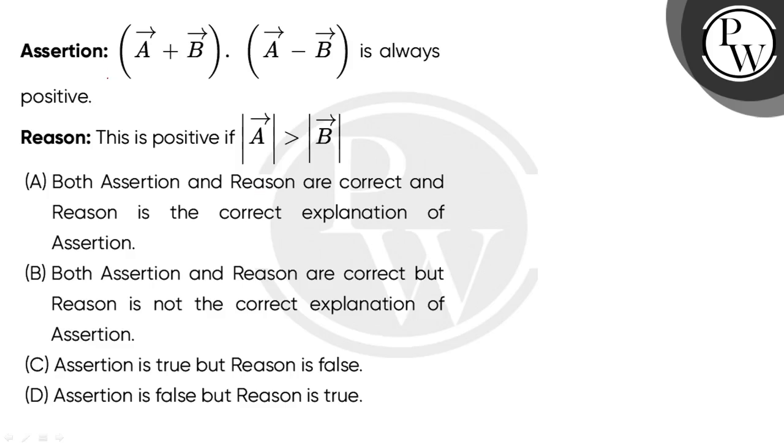First, let's read the question. Assertion: (A+B)·(A-B) is always positive. Reason: This is positive if |A| > |B|. Okay, so let's check this quantity.